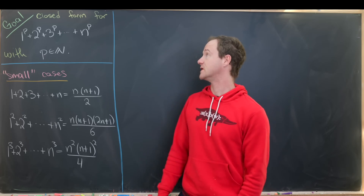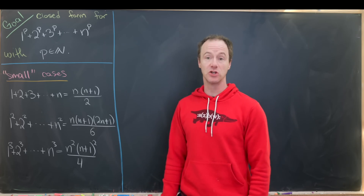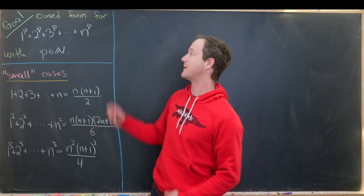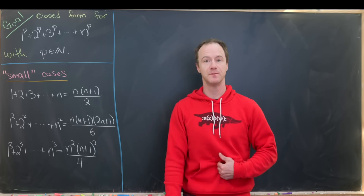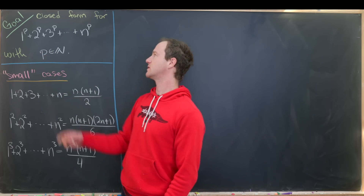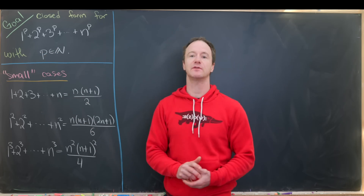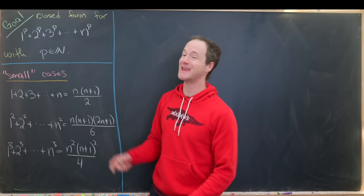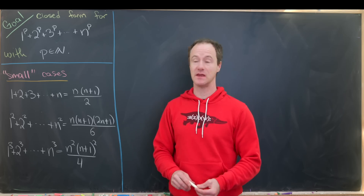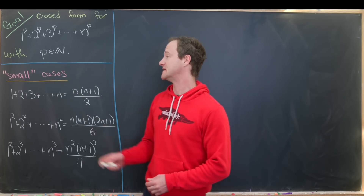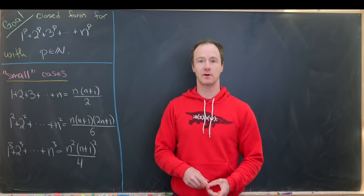Our main goal for this video is to find a closed form for the following power sum: 1 to the p plus 2 to the p plus 3 to the p, all the way up to n to the p, where p is a natural number.